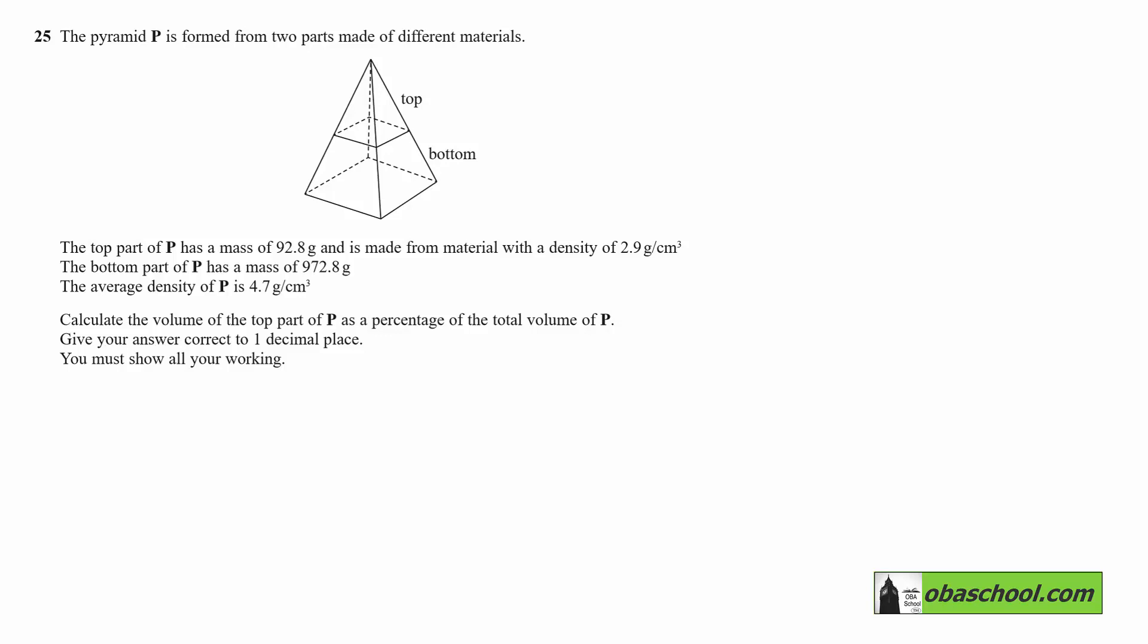The pyramid P is formed from two parts made of different materials. The top part of P has a mass of 92.8 grams and is made from material with a density of 2.9 grams per cubic centimeter. The bottom part of P has a mass of 972.8 grams. The average density of the whole pyramid is 4.7 grams per cubic centimeter.